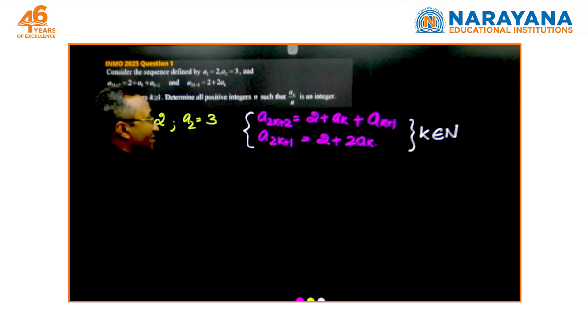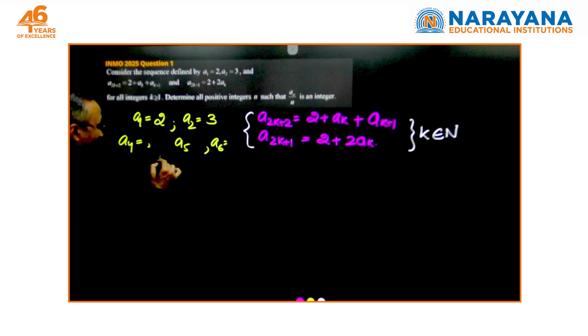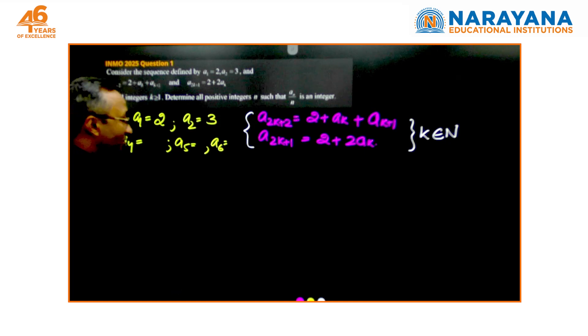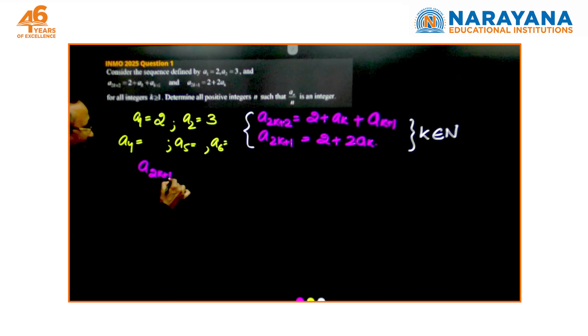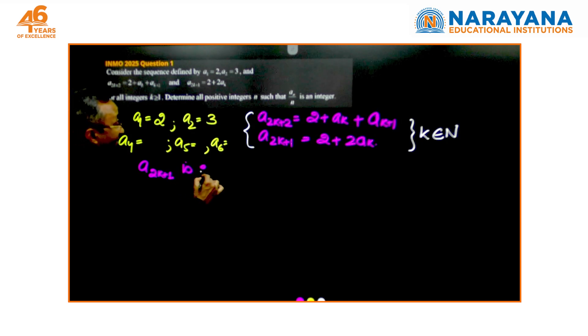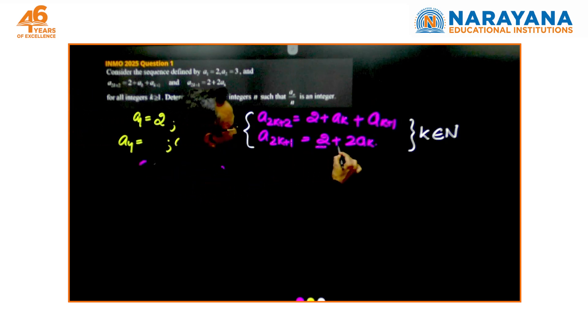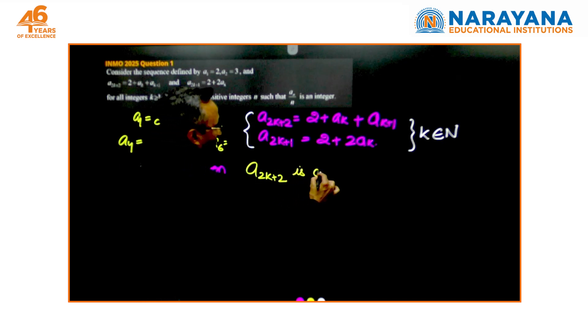The observations that we need to make initially: if I keep on understanding more values of a4, a5—I will leave it up to you to get these values and understand how it's going because you definitely have gone through the paper so you have the idea how it works. But the moment I start looking at these values, we realize one thing.